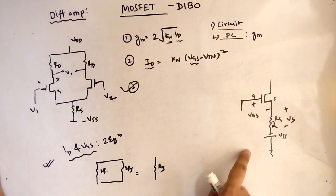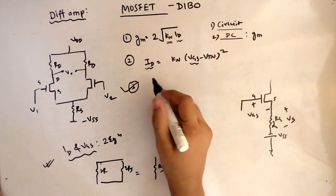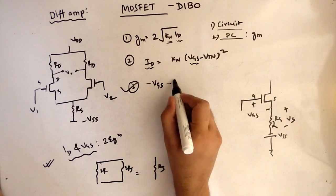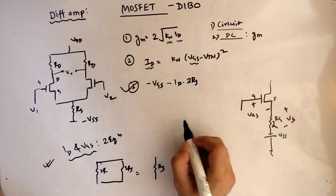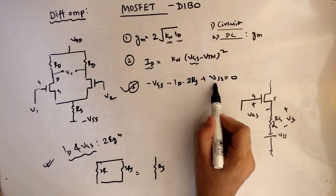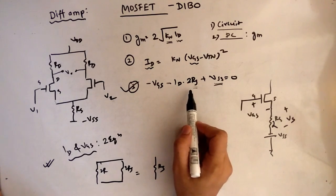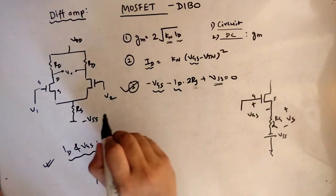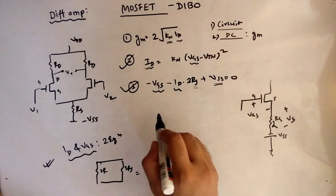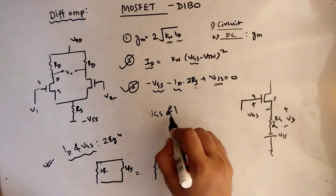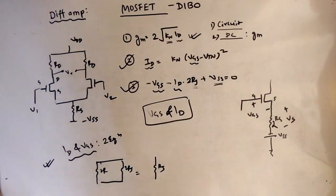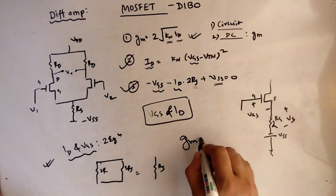Now we apply KVL to the broken circuit. Going around the loop: −vgs − id · (2RS) + vss = 0. Here, vss and RS are given in the question. The unknowns are vgs and id. With two equations — the id saturation equation and the KVL equation — and two unknowns, we can solve for both vgs and id. Substituting the id value into the gm equation gives us the final value of gm.